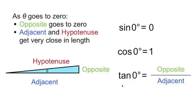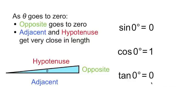Finally, tangent is opposite over adjacent. Again, opposite goes to 0, and 0 over anything is still 0. So the tangent of 0 degrees is 0.